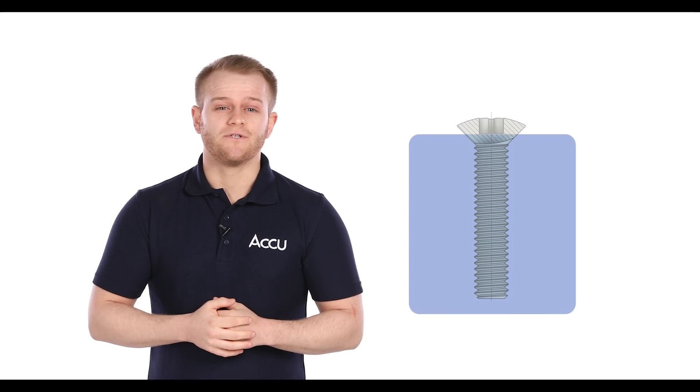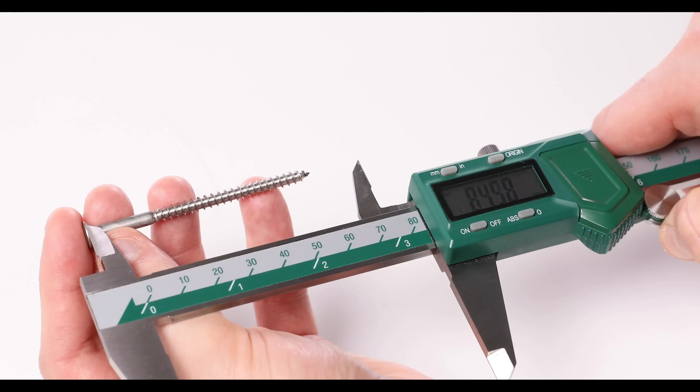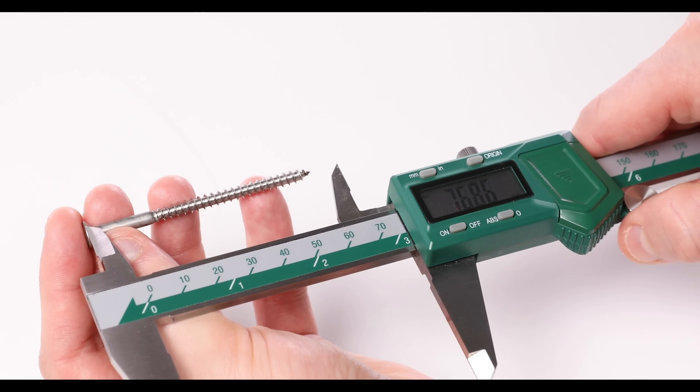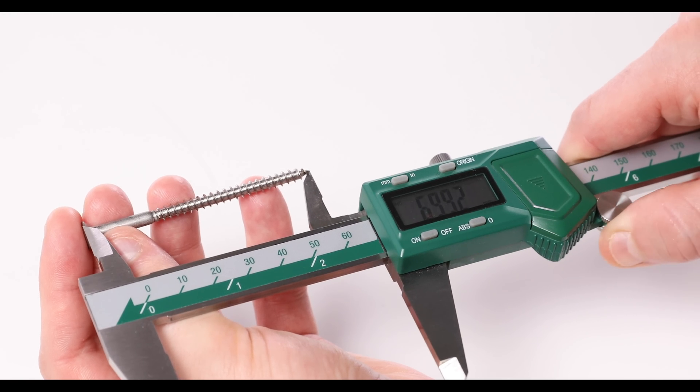And for the raised countersunk screw where only the rounded portion of the head protrudes from the surface we would measure from the lip of the head its widest point down to the tip of the screw.